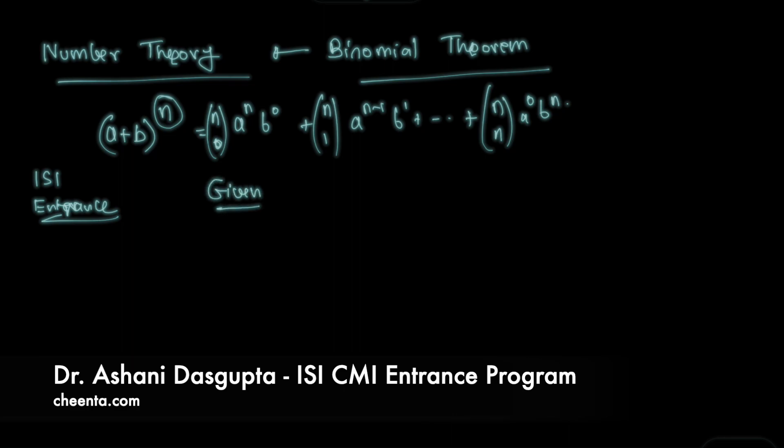The problem says that there is an expression 2 to the power 2n minus 3n minus 1. We want to show that 9 divides 2 to the power 2n minus 3n minus 1.